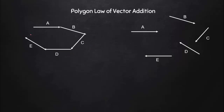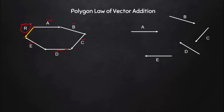This open polygon has sides 1, 2, 3, 4, 5. The sixth side, which would complete the polygon, if I place it in the opposite (reversed) direction, then that vector — from the tail of the first vector to the head of the last vector — is the resultant of all the vectors. You can see a cycle forming: all vectors go in one order, but this closing vector is reversed. So R-bar equals A-bar plus B-bar plus C-bar plus D-bar plus E-bar.